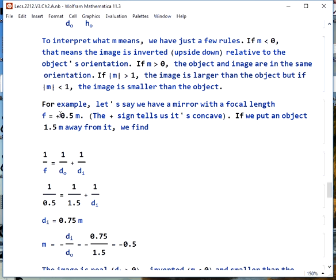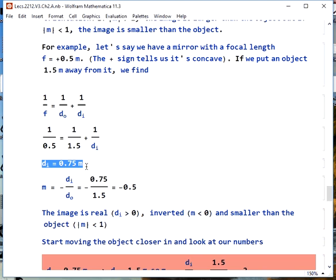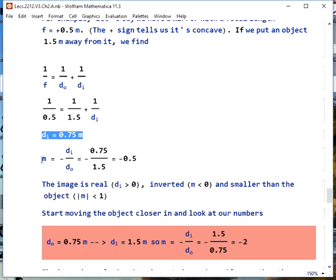For example, if we had a mirror with a focal length of 0.5 meters, and that's positive, the positive sign tells us it's a concave mirror. If we put an object 1.5 meters away from it, we can calculate, using the thin lens equation, that our image will be 0.75 meters away from it. We then use the magnification equation, and we get magnification of negative 0.5. Notice this is dimensionless, since it's the ratio of two distances. We know this image is real. Since DI is greater than 0, we could project it on a screen. It's inverted, or upside down, relative to the object, since M is less than 0. And it's smaller than the object, since the absolute value of M is less than 1.